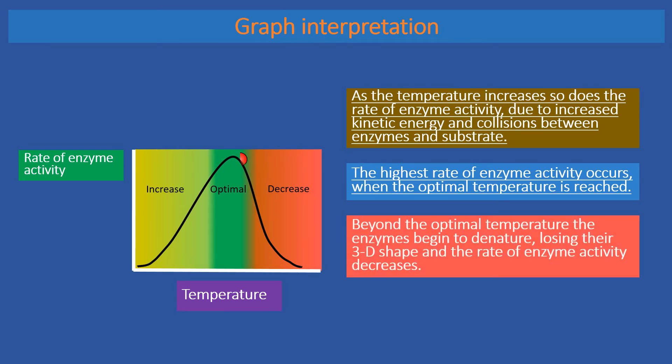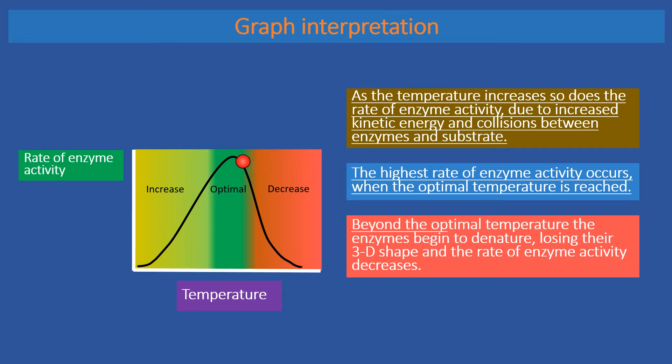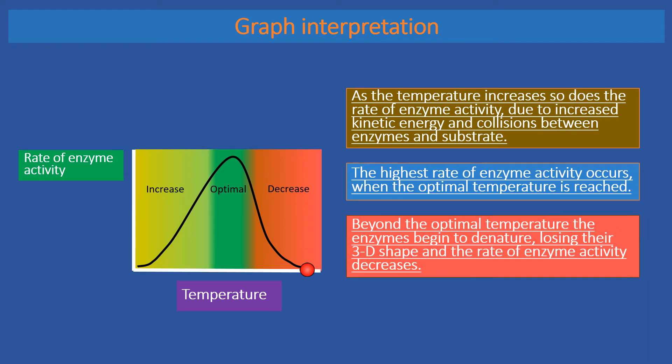Beyond the optimal temperature the enzymes begin to denature, losing their 3D shape and the rate of enzyme activity decreases as a result. Because now the active site has got a different shape and the substrate can no longer fit into it, and this causes the decrease.